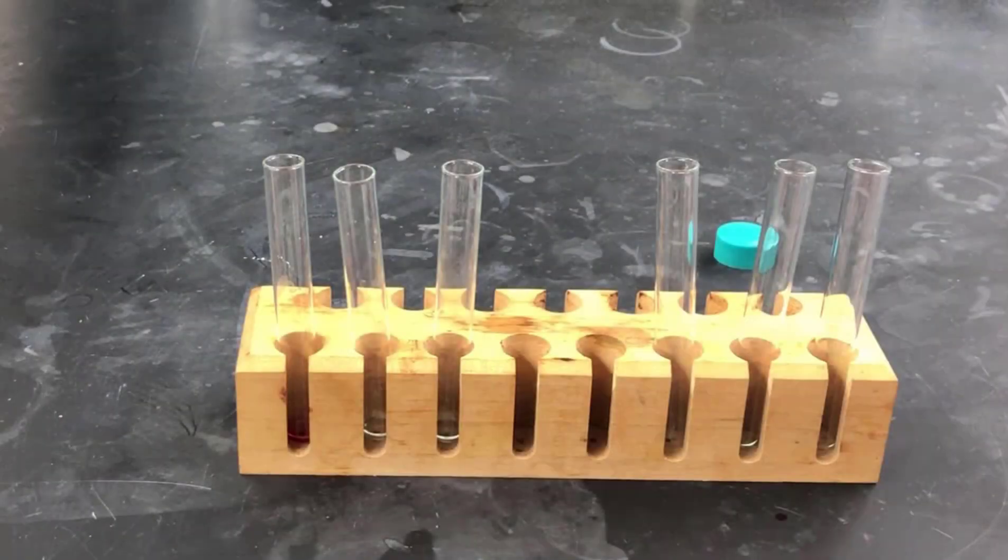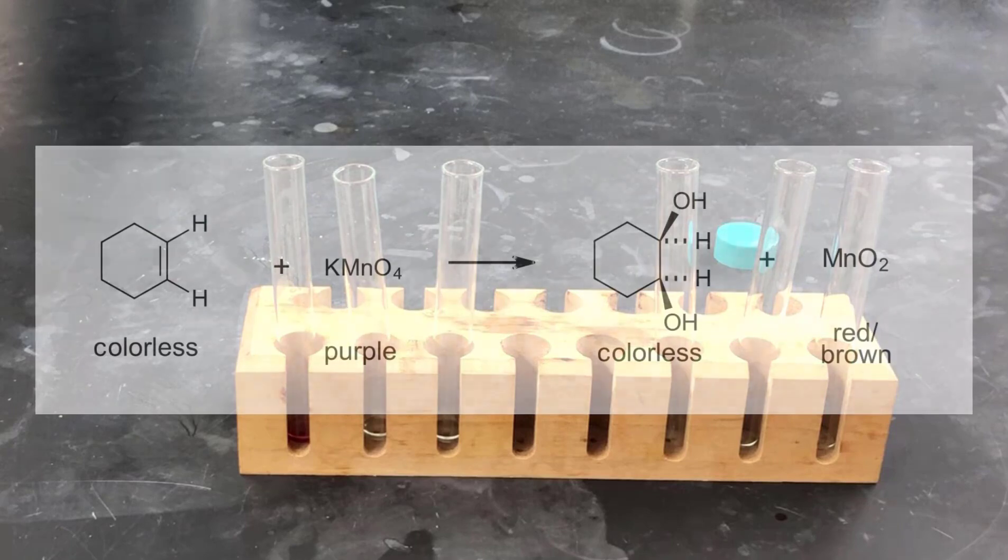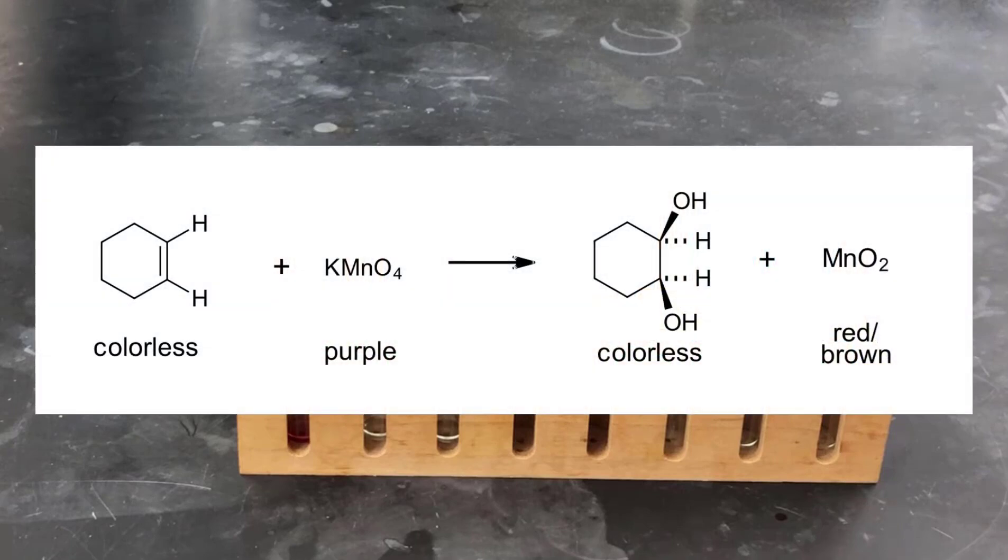The second color change reaction that we'll look at involves a colorless alkene reacting with purple potassium permanganate solution. Those two react to give an addition product, a 1,2-diol, and manganese dioxide, which is a red-brown solid. The color change that you'll look for in this reaction that indicates a positive test would be the purple solution becoming a red-brown, chunky solid.